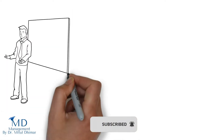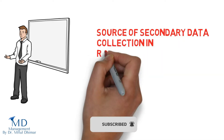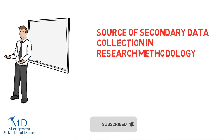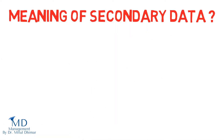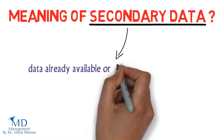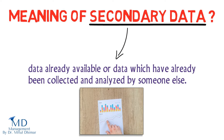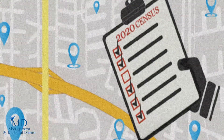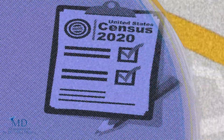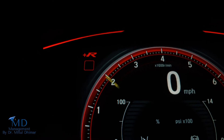In this video, we are going to understand sources of secondary data collection in research methodology in detail. Secondary data means data already available, or data which have already been collected and analyzed by someone else. For example, census data used by a researcher to study the community-wise ownership and utilization of vehicles.